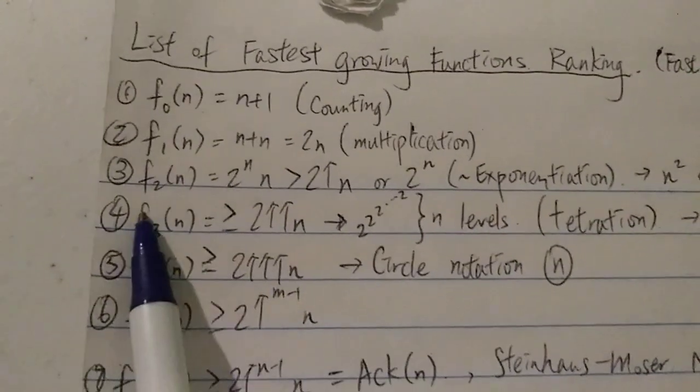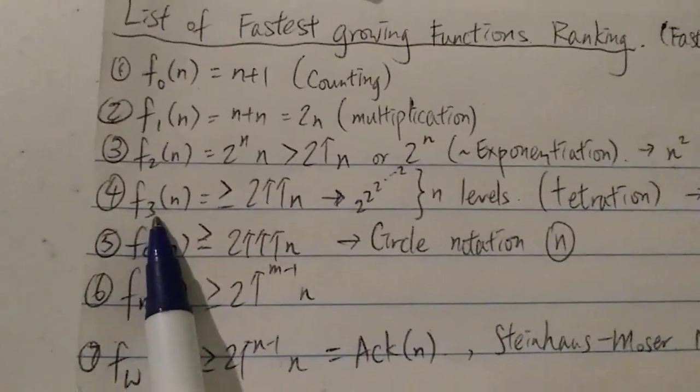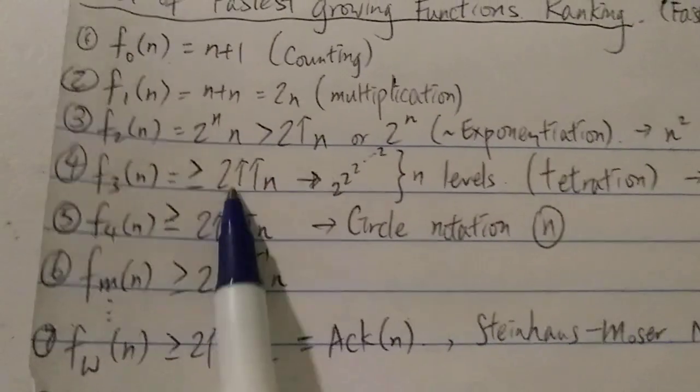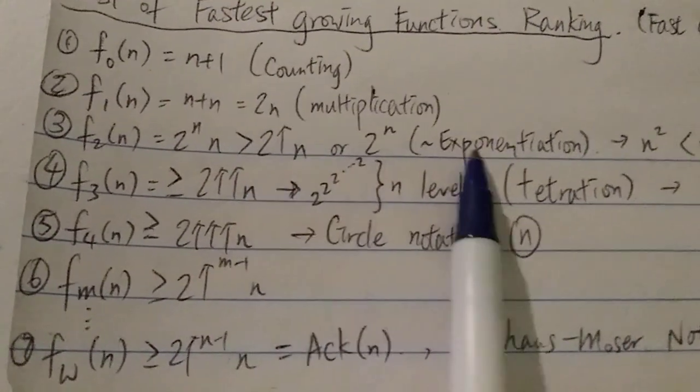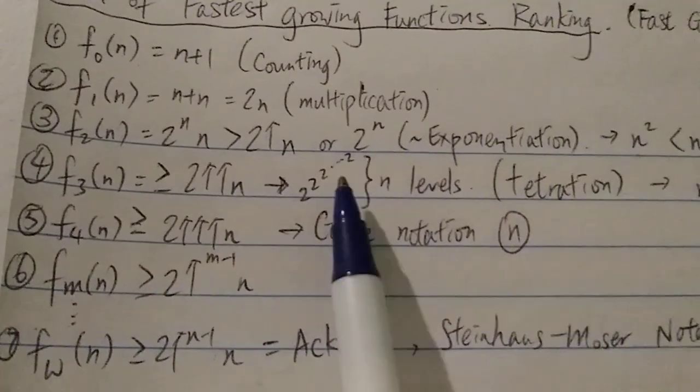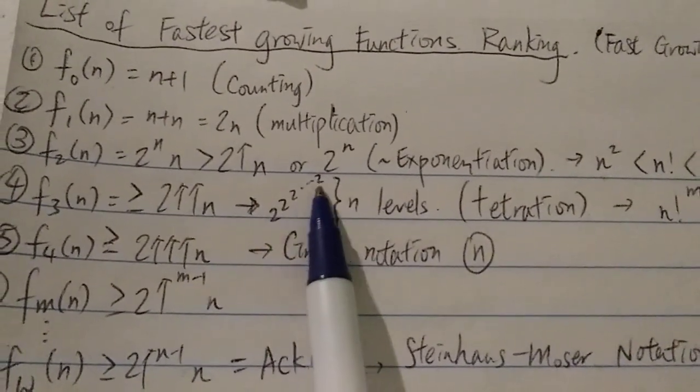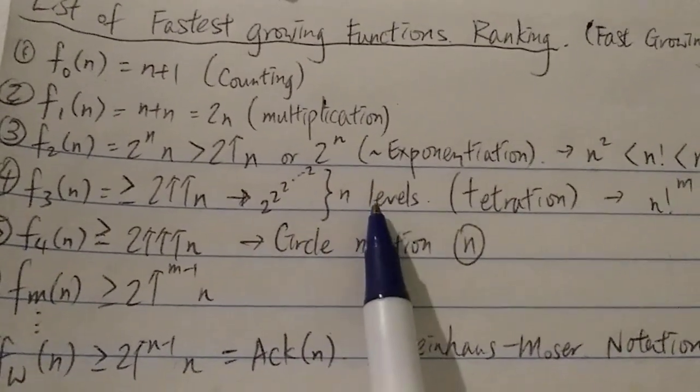So next, level 4, we have F3(n), which is greater than 2↑↑n. So as you can see, we add one more arrow over here, which means repeated exponentiation. And as you know, this is called tetration, which is 2 to the 2 to the 2 to the 2, with n levels.